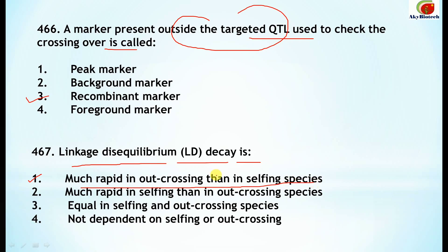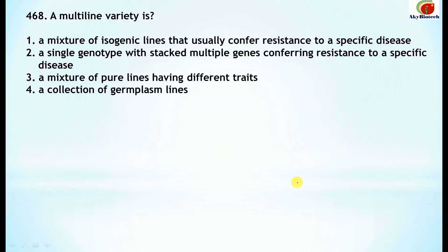LD decay is much more rapid in the case of outcrossing than in the case of selfing species. Question 468: a multi-line variety is a mixture of isogenic lines that usually confer resistance to a specific disease — this is known as the multi-line variety.